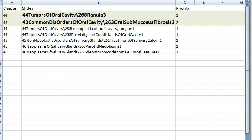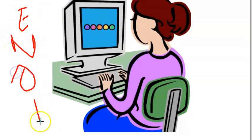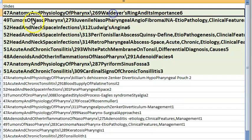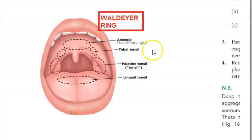Moving on to pharynx. Anatomy and physiology: Waldeyer's ring — adenoid (nasopharyngeal tonsil), tubal tonsils, palatine tonsils (simply called tonsils), and lingual tonsils.